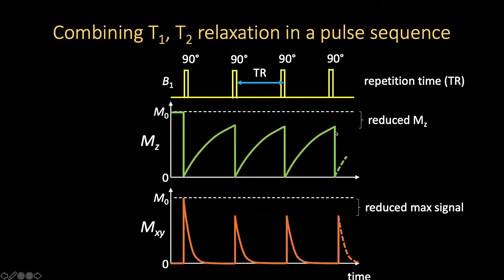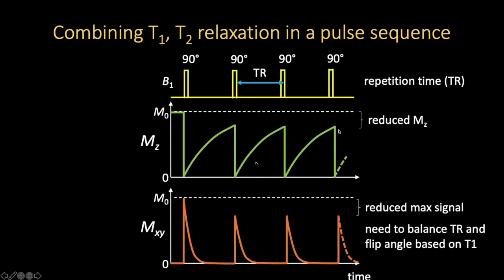We have a reduction in Mz based on how closely spaced the excitation pulses are as well as what the flip angle is. We need to consider what our repetition time will be in an experiment and what flip angle we'll use — all hinging on what is the T1 relaxation time of interest. If T1 was much shorter, we might have gotten back to complete recovery by the time of our next 90-degree pulse.